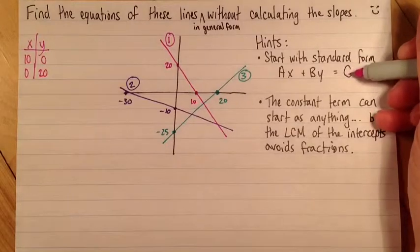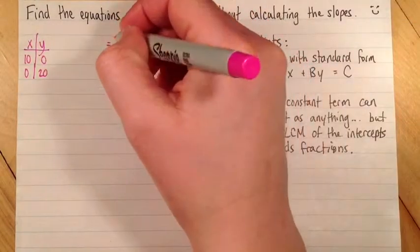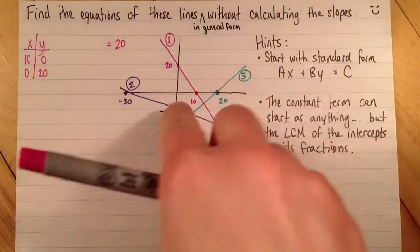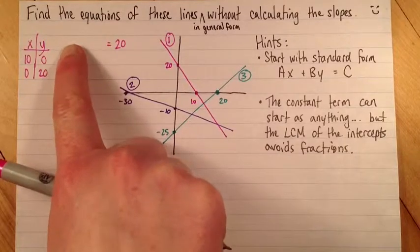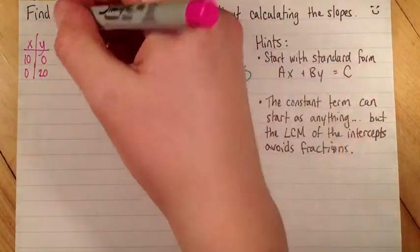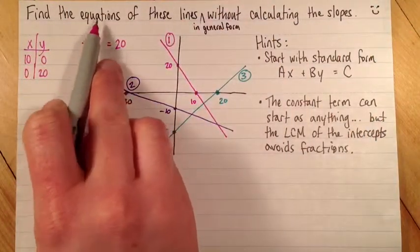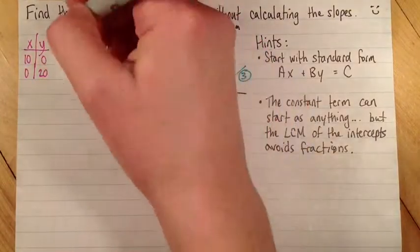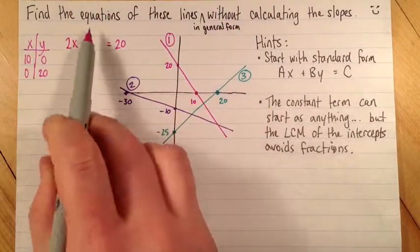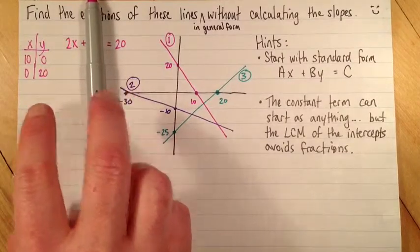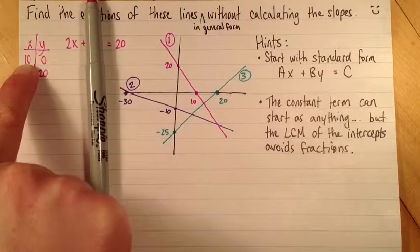For my c value, my constant term, I'm going to start with the lowest common multiple of 10 and 20, which is just 20. So what I ask myself is, if y was 0, then the only relevant term is the x term. I'm asking myself, how many x's will equal 20? And the answer is just 2. So 2x equals 20. That works for this point. 2 times 10 equals 20.